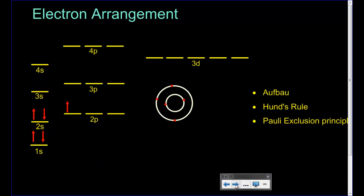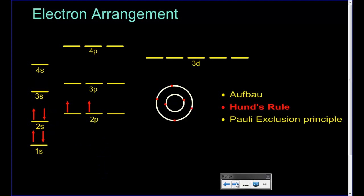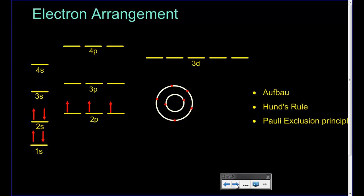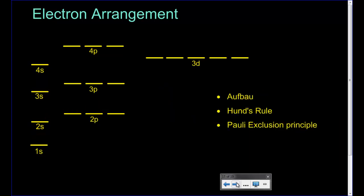Moving on, the next electron jumps to the 2p orbital. As we move across, these orbitals all have equal energy, so electrons jump to the next orbital rather than pairing up until they have to. This rule of filling equal energy orbitals is called Hund's rule: we fill each orbital half full before pairing them up. The next electron then goes in and pairs up with a minus one-half spin.